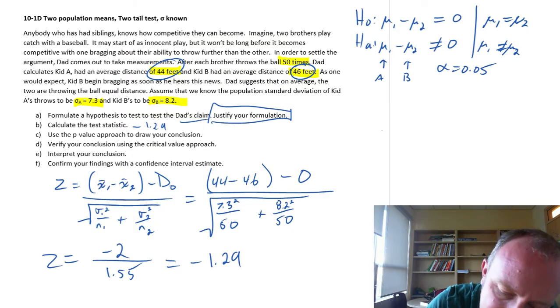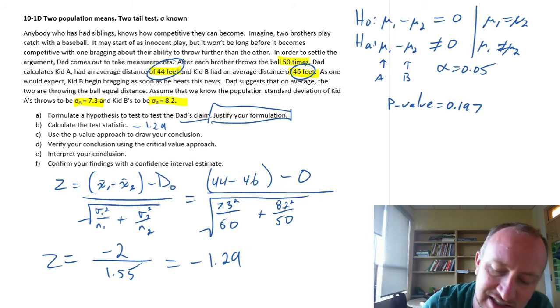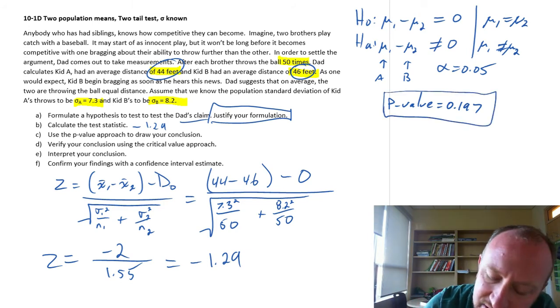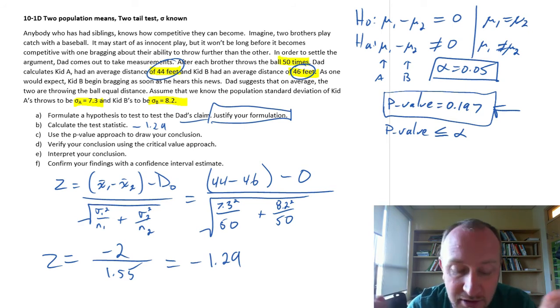So coming back to our problem, my p-value is 0.197. So what do we say to these kids? There really is no difference in your ability to throw that baseball. Your average flight distances are statistically the same. With a p-value as large as that, remember our rejection rule: we reject if the p-value is less than or equal to alpha. Alpha is 0.05. That p-value is definitely greater than alpha. So there is no way that we can comfortably reject. Our evidence here then supports the null hypothesis.